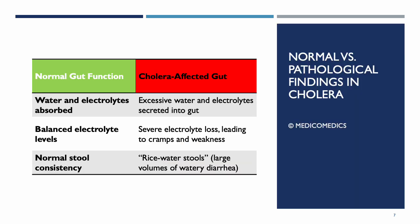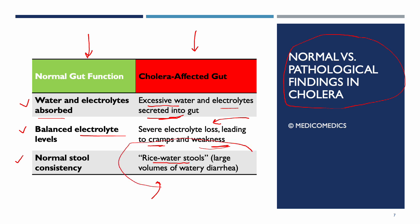Comparing normal versus pathological findings: in a normal gut, water and electrolytes are balanced, electrolyte levels are balanced, and stool consistency is normal. In a cholera-affected gut, excessive water and electrolytes are secreted into the gut, causing severe electrolyte loss leading to cramps and weakness, and rice water stools due to large volumes of watery diarrhea and their cloudy appearance.